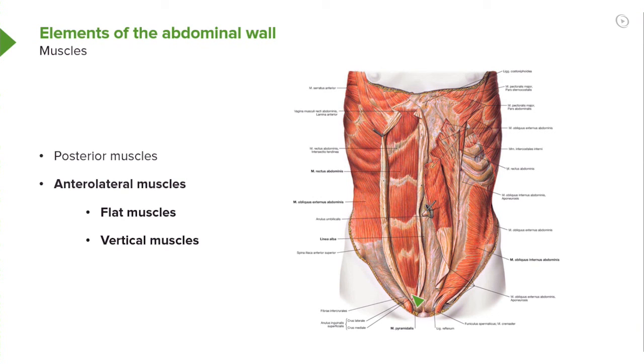The last vertically oriented muscle, which may be absent, is the pyramidalis. And it is bilateral, so you have a right one and a left one.